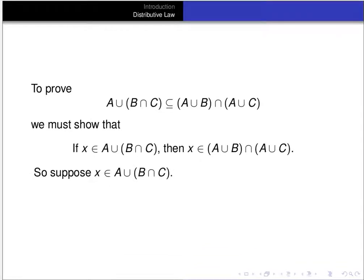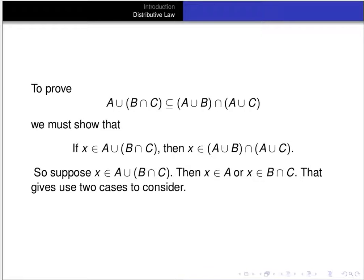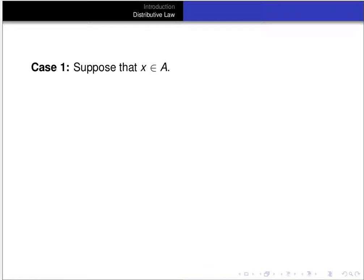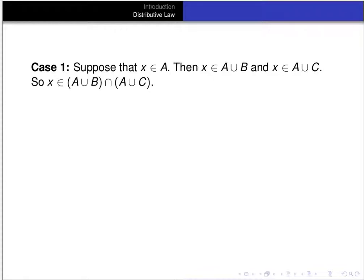To prove that A∪(B∩C) is a subset of (A∪B)∩(A∪C), we have to show that if x is an element of A∪(B∩C), then x is an element of (A∪B)∩(A∪C). Suppose x is an element of A∪(B∩C). That tells us x is in A or x is in B∩C — two cases. In case one, suppose x is in A. Then x is in A∪B, and also x is in A∪C.